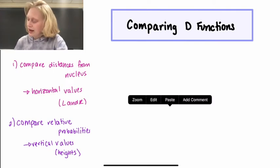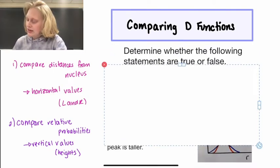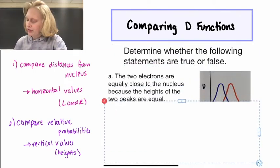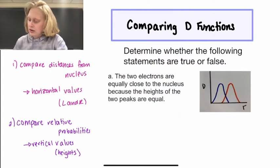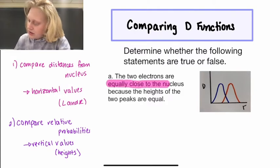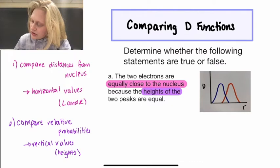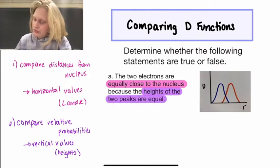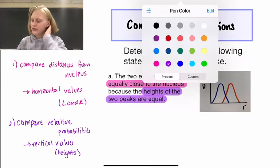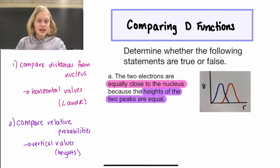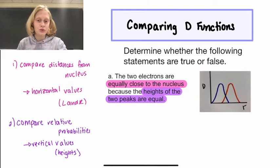So we're going to look at some statements and decide whether they are true or false. The first one says the two electrons are equally close to the nucleus because the heights of the two peaks are equal. From first glance, we can tell that this statement is going to be false because they're trying to use vertical values or heights to compare distances from the nucleus.